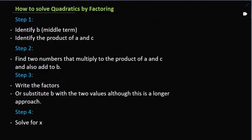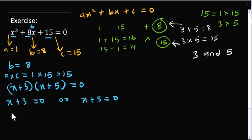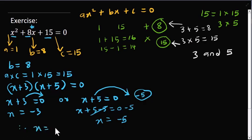After factoring the expression, the next step is to solve for x. We have x plus 3 equal to 0 or x plus 5 equal to 0. Every quadratic is meant to have two answers. Collecting like terms — taking 3 to the other side gives x equal to minus 3. For the second factor, subtracting 5 from both sides gives x equal to negative 5. Therefore, x equals negative 3 or x equals negative 5, and that is our final answer.